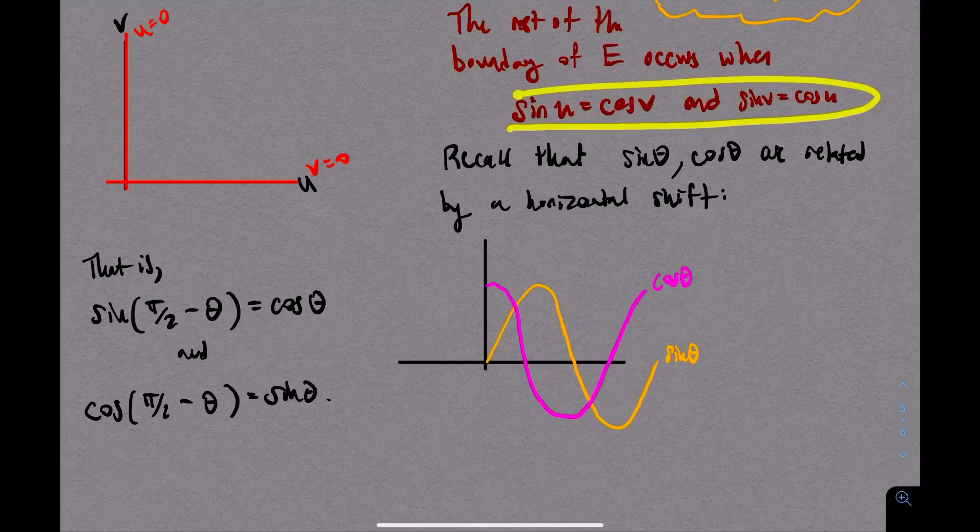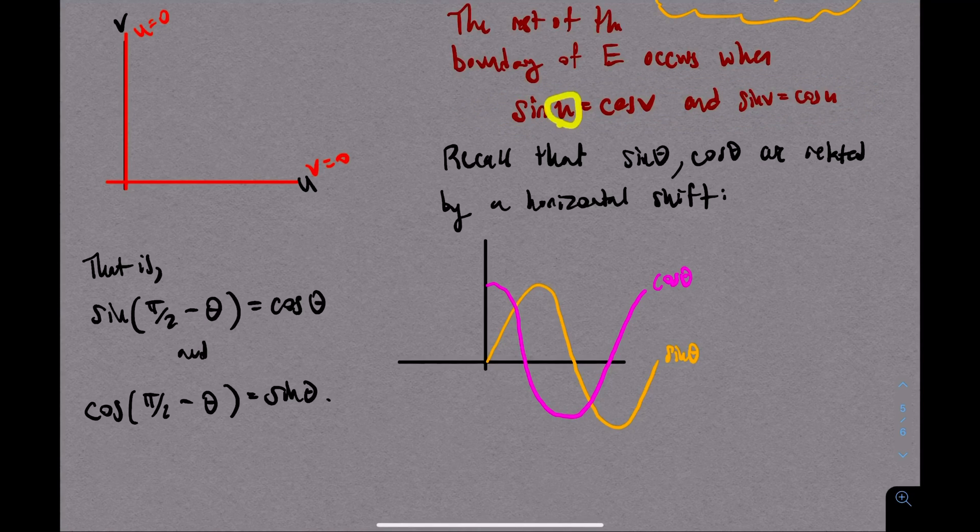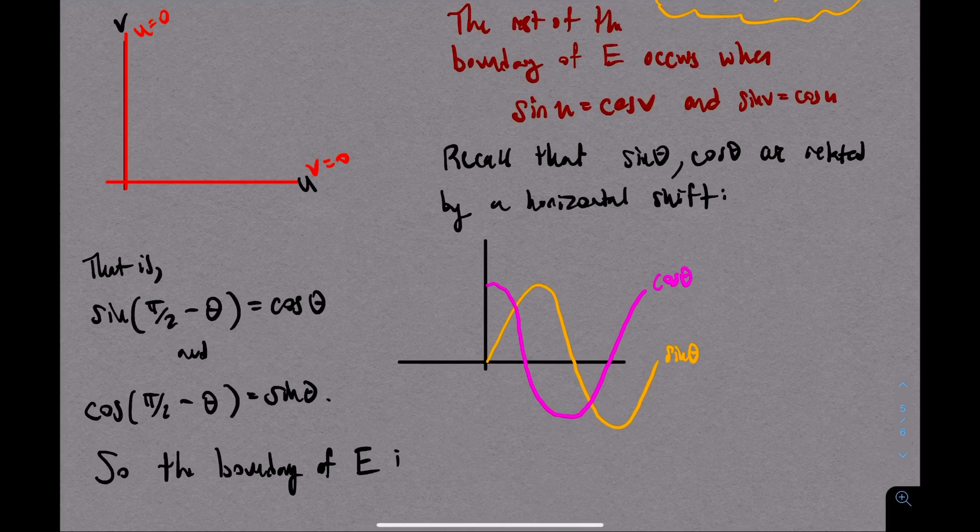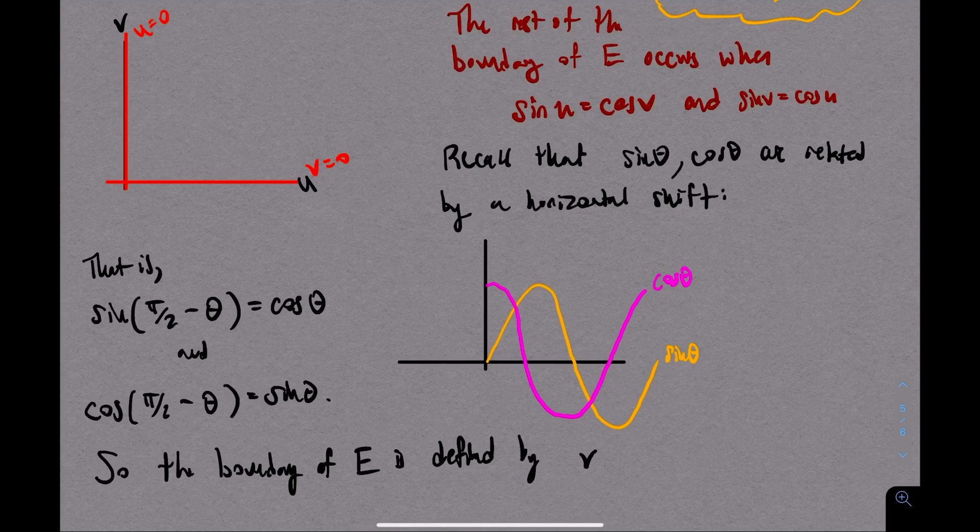Now look at the equalities we're trying to achieve. If I want, for example, sine of u to be cosine of v, by this trig identity, what that tells me is that I want v to be pi over 2 minus u. Likewise, if I want sine of v to be cosine of u, I want u to be pi over 2 minus v. Now v equals pi over 2 minus u and u equals pi over 2 minus v. Those are the same exact equation. So the boundary of this region e is further defined by v equals pi over 2 minus u.